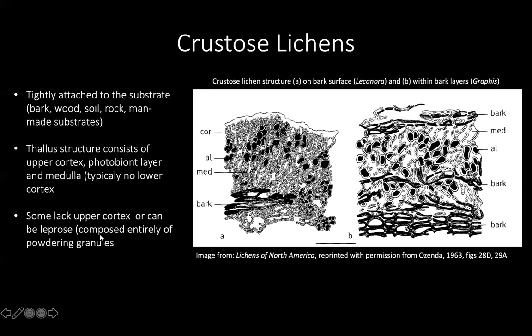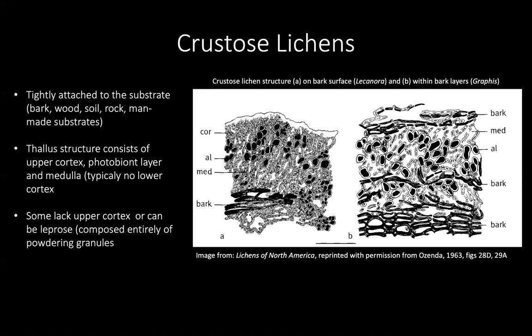Let's begin with some basic definitions. Crustose lichens are those lichens that are tightly attached to the substrates on which they grow, whether it be bark, wood, soil, rock, or man-made substrates like metal or wooden fence posts or cars. Lichens can pretty much grow anywhere, and this illustration shows you how the crustose form of lichens can grow almost intermixed with their substrates at times.